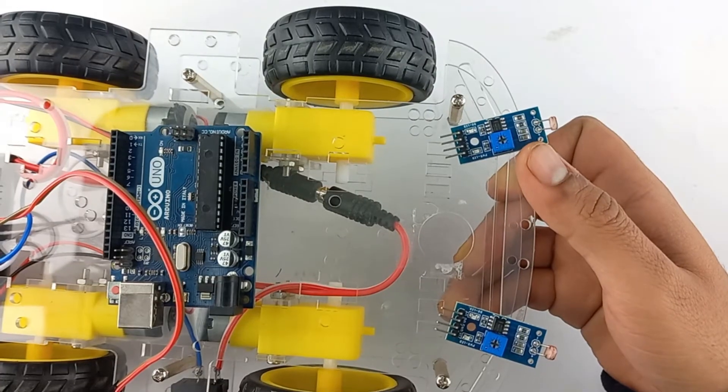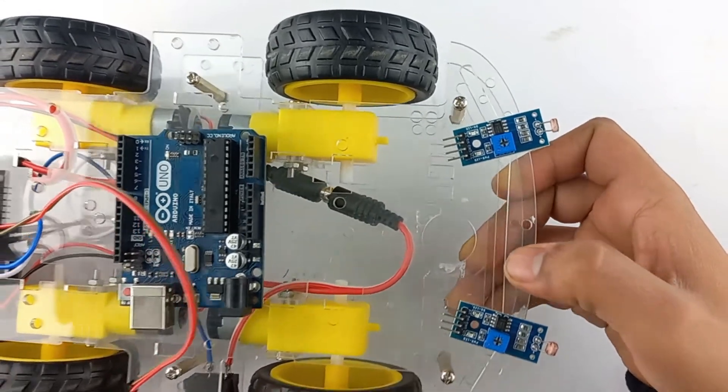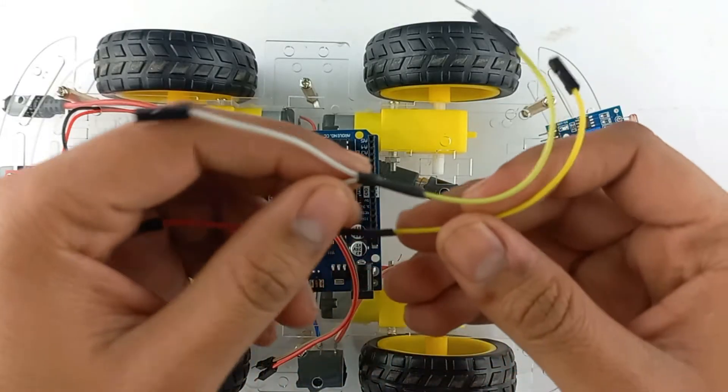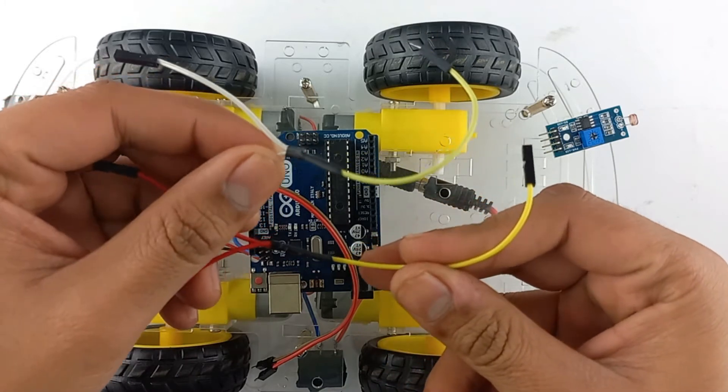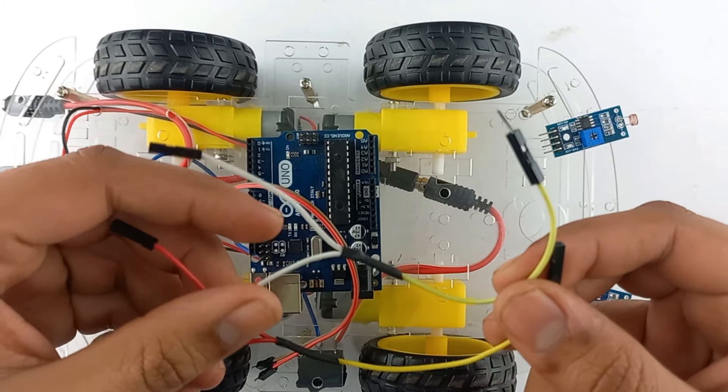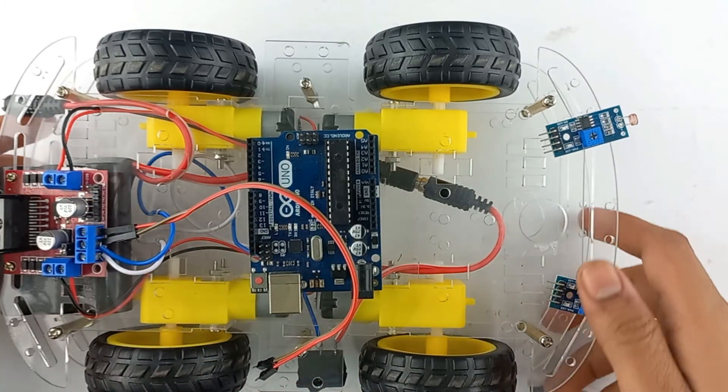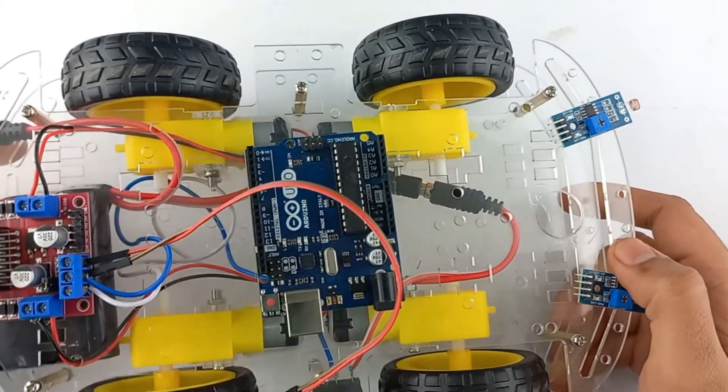Now in order to connect VCC of both the LDR sensor modules, I have taken a tapping like that for both VCC and ground and will make the connections accordingly. Now let's connect the circuit as per circuit diagram and connection table showing on your screen.